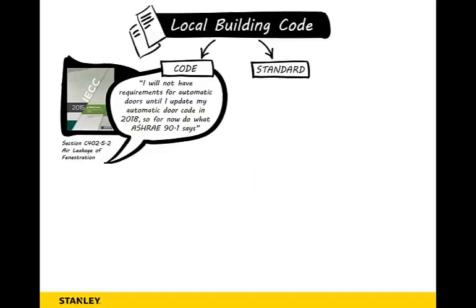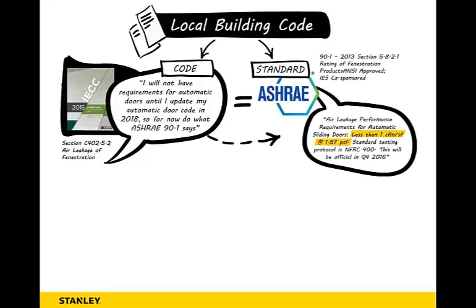The go-to code is the International Energy Conservation Code. Right now, the IECC is saying it doesn't have requirements for automatic doors until it updates its automatic door code in 2018. So for now, do what ASHRAE 90.1 says. ASHRAE 90.1 says air leakage performance requirements for automatic sliding doors shall be less than 1 cubic feet per minute per square foot at 1.57 PSF.